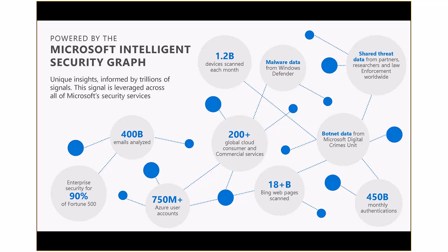It captures intelligence from over 450 billion authentications per month, more than 400 billion email scans in a month, over a billion device scans, and intelligence from a whole raft of sources including law enforcement, our own digital crimes unit for botnet data, our own teams of security researchers and hunters. So it has a massive repository of security-related data and intelligence from across the globe.